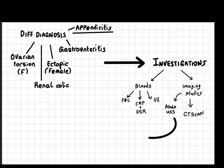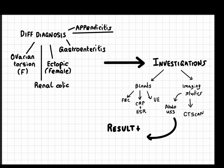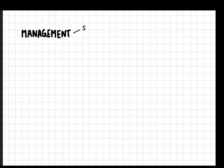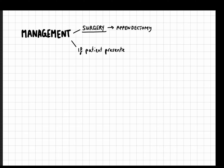Now let's move on to diagnosis. The blood test results showed an elevated white cell count of 14, and the CT scan confirmed an enlarged appendix with wall thickening, confirming acute appendicitis. Management typically involves surgical intervention. The standard treatment is appendectomy, performed laparoscopically, which is the preferred method. Additional treatment includes IV fluids and antibiotics to cover common pathogens, along with pain management and early mobilisation.